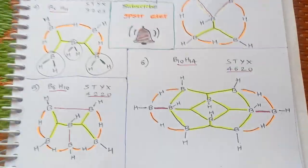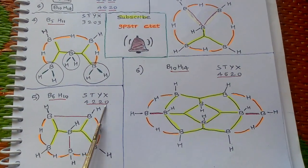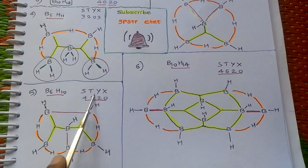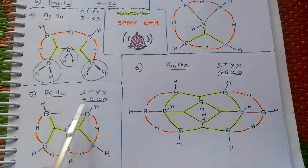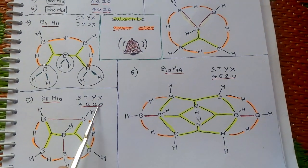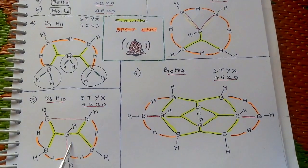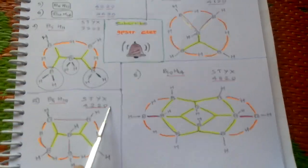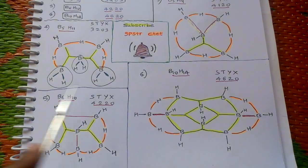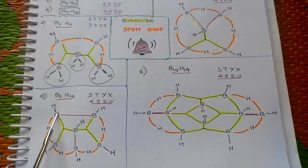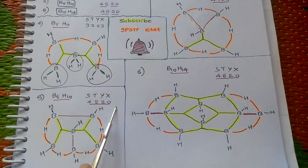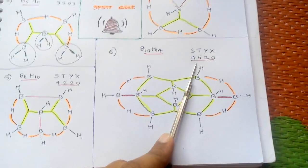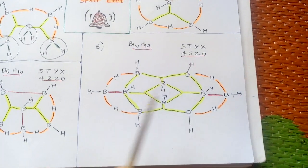For B6H10, the STYX code is 4220. There are four BHB bonds, two BBB bonds, and Y — the BB bonds — are two. X is zero, meaning no BH2 groups are present; only BH groups appear here.